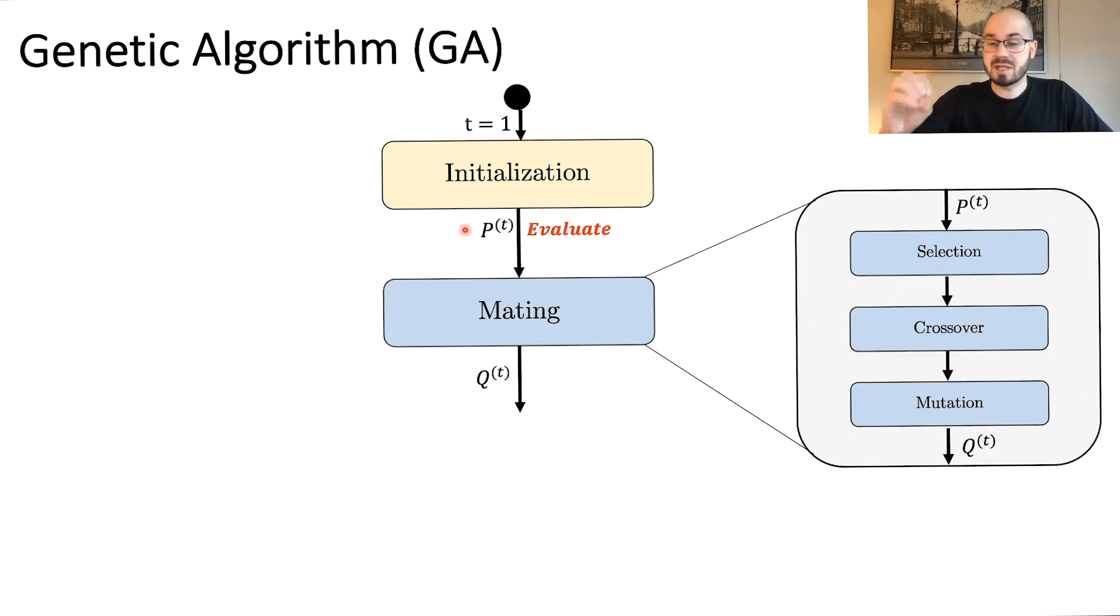Then the second part of the algorithm execution is the mating process. The mating process takes the current population p of t and creates a so-called offspring population q of t. And the mating has three steps: the selection which means you select some individuals, individual is one solution of a population from p of t. Then we do a so-called crossover, a mutation, and then this creates an offspring. And the output of mating is a new offspring population q of t.